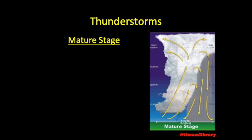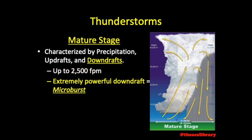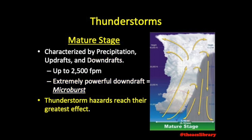We enter the mature stage as these water droplets fall, dragging along cool air. The consequence of this rushing cool air is downdrafts. The mature stage of a thunderstorm is characterized by precipitation falling and a combination of updrafts and downdrafts. These downdrafts may reach speeds of up to 2,500 feet per minute, and at the surface will spread outward from the point of contact. An extremely powerful downdraft is known as a microburst. All thunderstorm hazards reach their greatest effect during the mature stage.